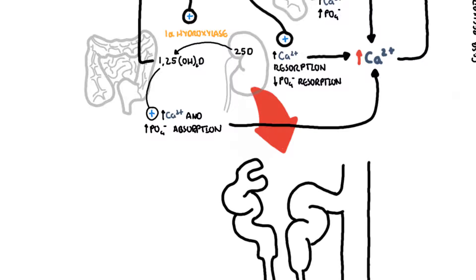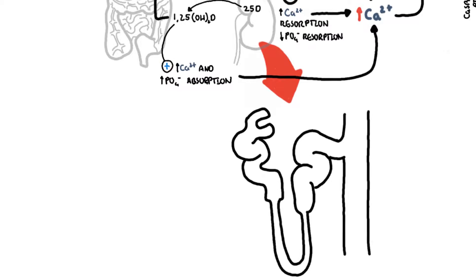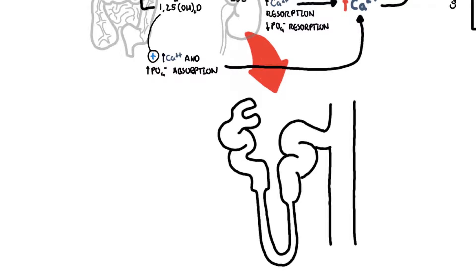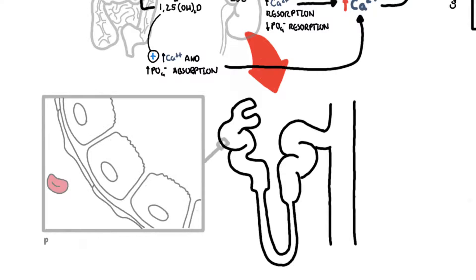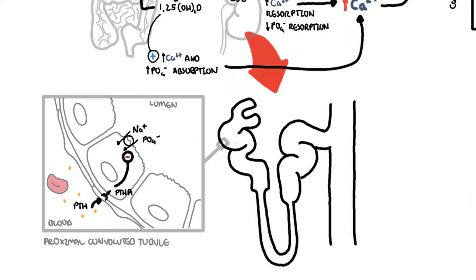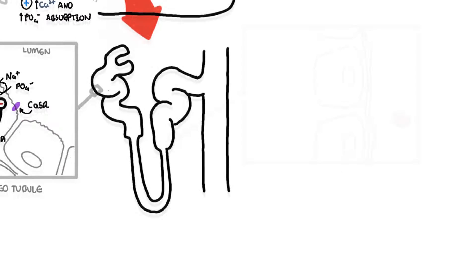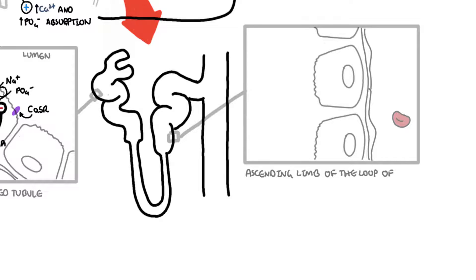Familial hypocalciuric hypercalcemia also causes physiological changes in the kidneys. The kidneys respond to parathyroid hormone by absorbing calcium but also causing phosphate excretion, by targeting cells in the proximal convoluted tubule and inhibiting the sodium-phosphate cotransporter, causing hyperphosphaturia and reducing blood phosphate levels. Throughout the nephron, the kidneys also contain calcium sensing receptors. The most important effect is found in the thick ascending limb of the loop of Henle, where the calcium sensing receptors are found on the basal surface of the cells, close to the bloodstream.